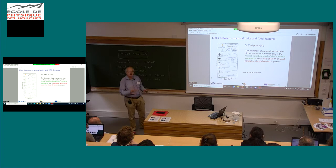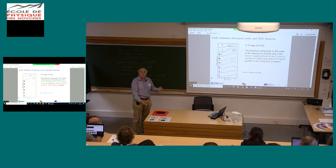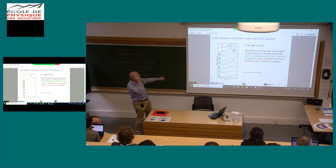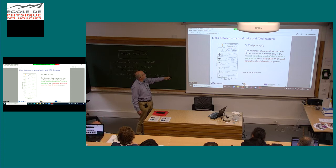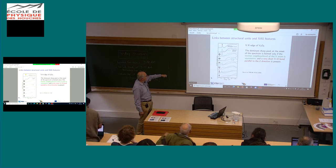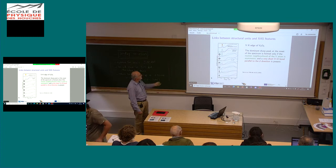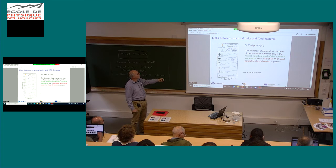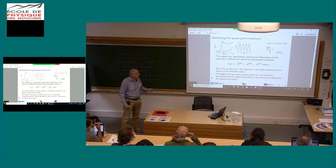There are some links between structural units and XANES spectral features. Some approaches to extract structural information from XANES spectra are based on the philosophy that certain features are linked to certain structural units. For example, for V₂O₅: from the unpolarized, polarization-averaged spectrum you don't learn much, but if you simulate the spectrum for various structural units, you find that a strong peak appears when there is an asymmetric neighborhood around the vanadium atoms and a very short vanadium-oxygen bond is present.